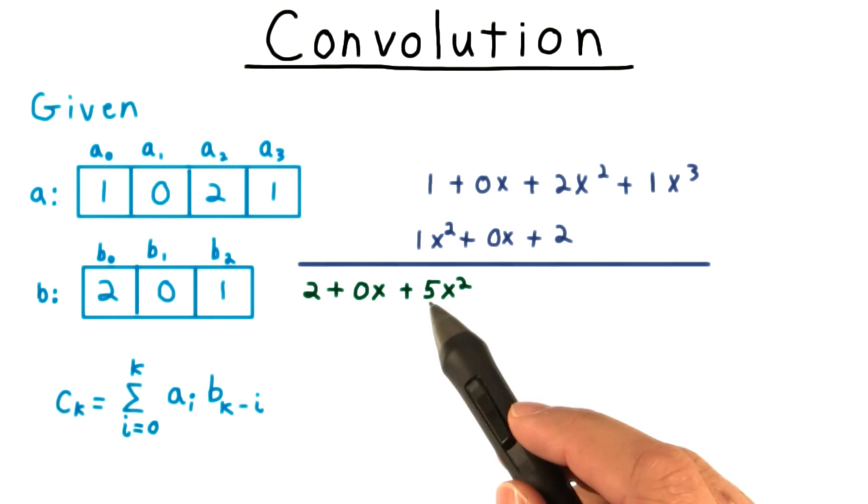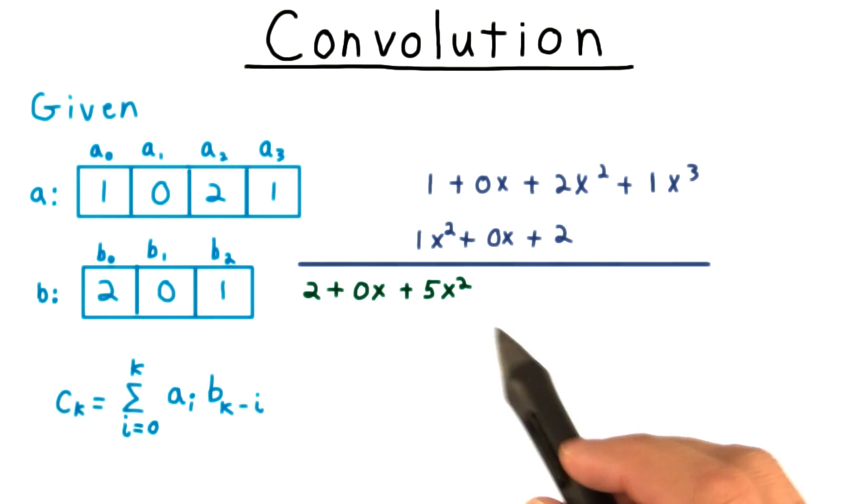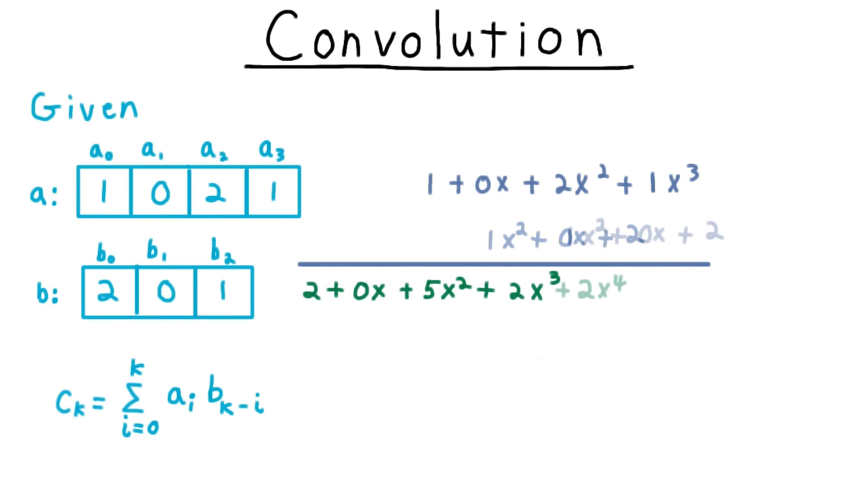Then we line them up so we get the quadratic terms, 5 times x squared, and so forth, and so on.